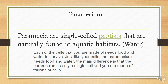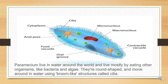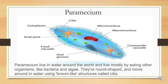We should consider the paramecium as similar to the cells we are made of. The paramecium has a shoe sole-like structure and they live in water. They are round shaped and move around in water using broom-like structures called cilia. That is why they are called ciliates — they belong to the group of ciliates.